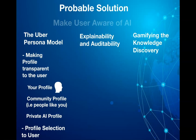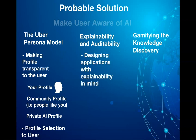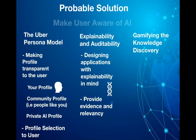The second theme is explainability and auditability. Designing applications with explainability in mind should be a key design principle. If the user receives an output from an AI algorithm, providing information as to why the output was presented and how relevant it is should be built into the algorithm. This would empower users to understand why particular information is being presented, and to turn off any preferences associated with the AI algorithm for future recommendations.